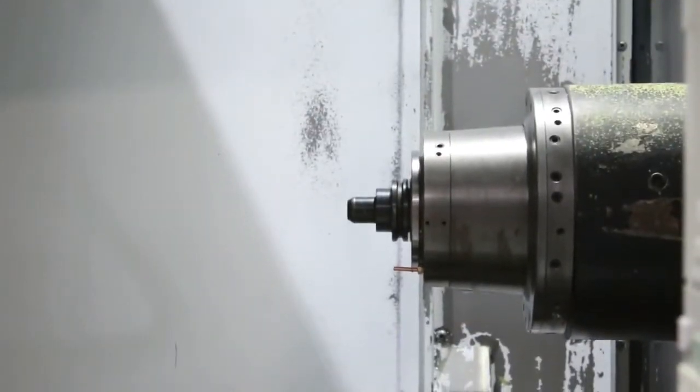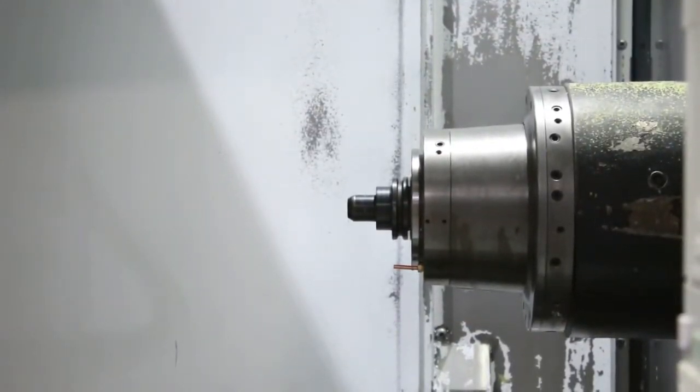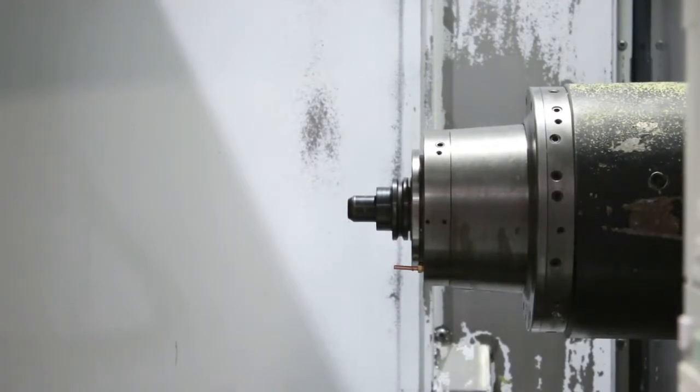Also, it has a full fourth axis. That's 10,000 rpm. You have cooling through the spindle and we do have a chip blaster with that.